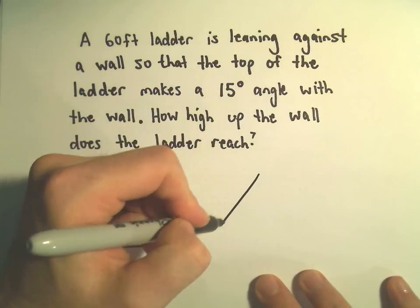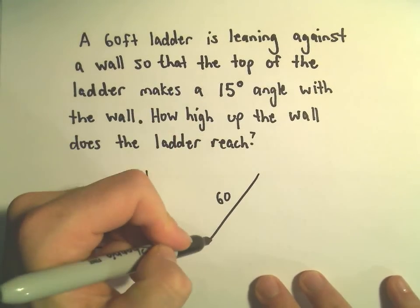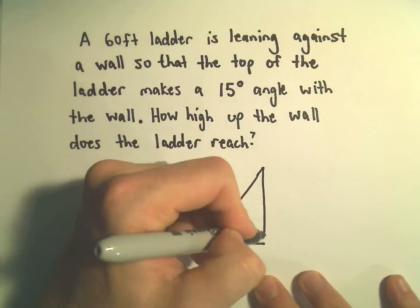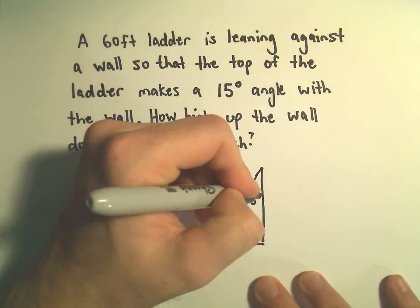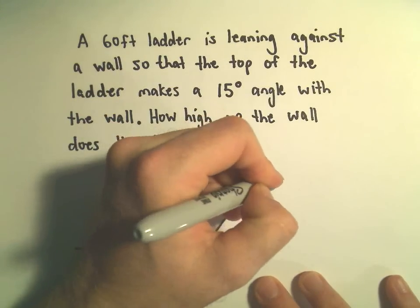So again, we've got our triangle here. The hypotenuse is length 60. We've got our 15 degrees up here, and we're trying to figure out the height.